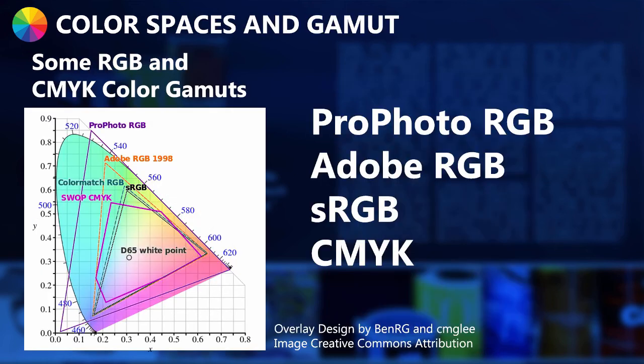Here are the gamuts for different color spaces. CMYK is technically a color mode or color model. Profoto RGB would be used for photography and has a wide range of available colors. Adobe RGB also has a lot — much more than sRGB — and sRGB has a slightly different color space than CMYK as we can see here.